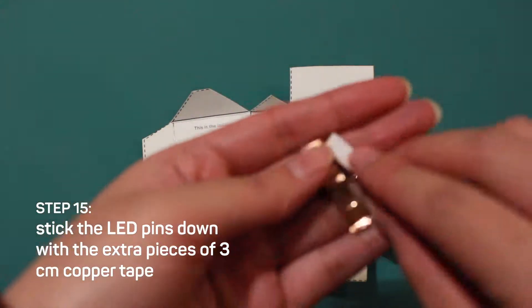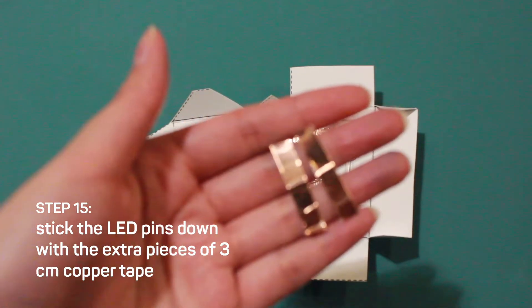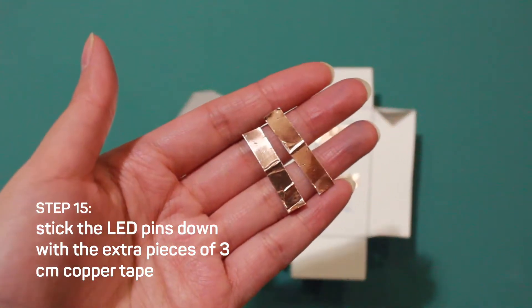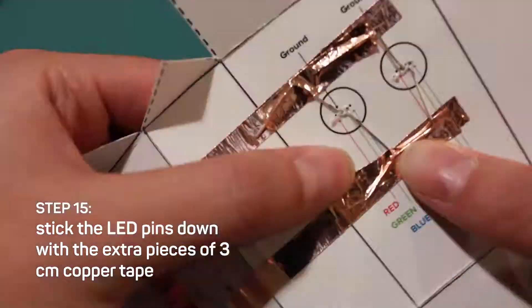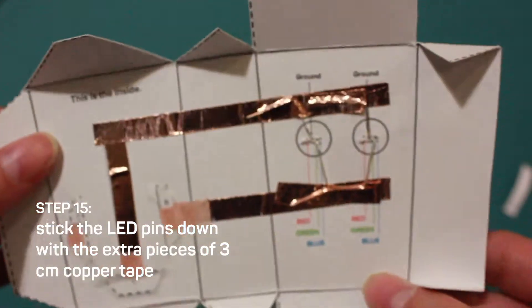Step 15, use the two extra pieces of copper tape that are three centimeters long. Use them to stick the ground LED pins down and the colored LED pins down.